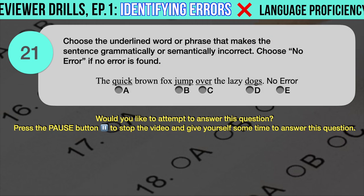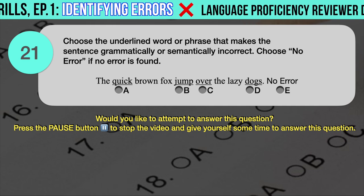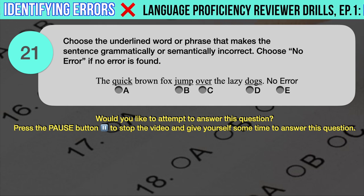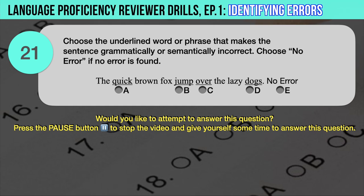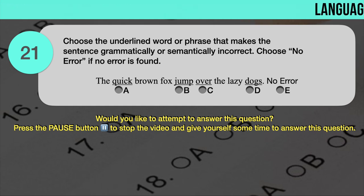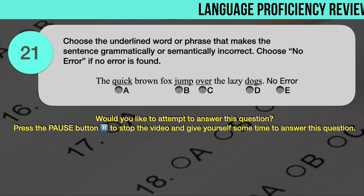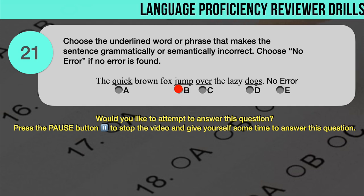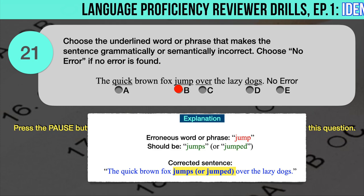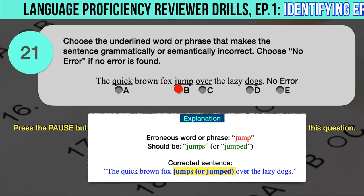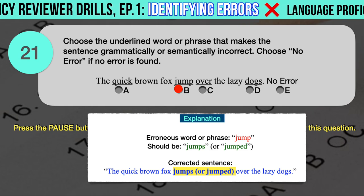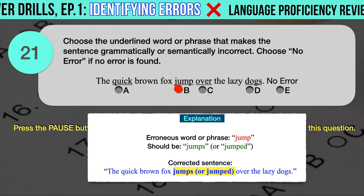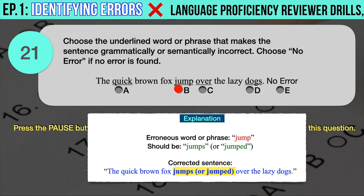Drill question number 21. 'The quick brown fox jump over the lazy dogs.' The underlined words are: A. Quick, B. Jump, C. Over, D. Dogs. The correct answer is B. 'Jump' should have been 'jumps' to match the singular noun 'fox.' It can also be 'jumped,' which is the word used in the famous typewriting exercise sentence. Correct sentence: The quick brown fox jumps or jumped over the lazy dogs.